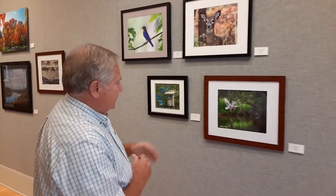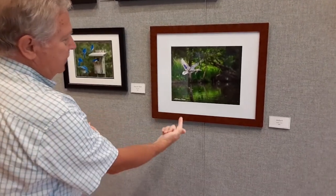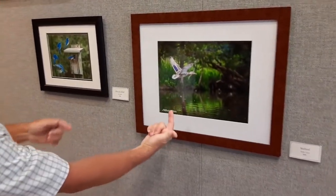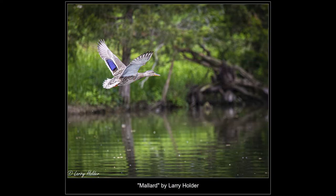Larry Holder took this photograph of a mallard, and it's a perfect example of the rule of thirds. The intersection of the vertical line on the left and the top one-third line is right where the mallard is, and the mallard is nicely in focus. He's taken it so that the background is blurred, so everything is highlighting the mallard itself.